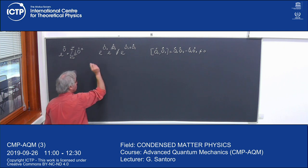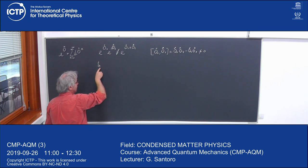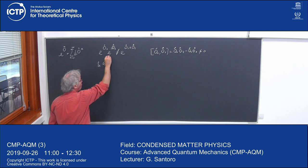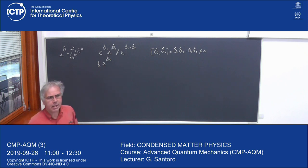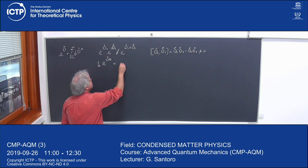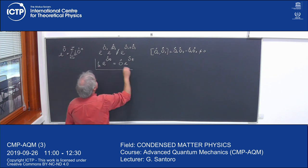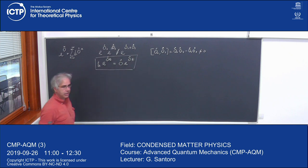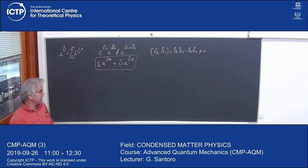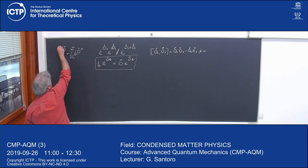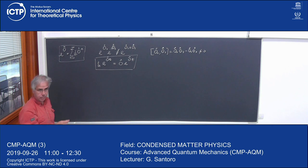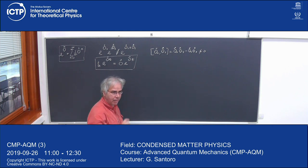However, something very similar to an ordinary function is the following. If I have a derivative with respect to t of e to the operator times t, this is something we will encounter with the Hamiltonian and the evolution operator. Then, this equals O times e to the Ot — as if these were ordinary exponentials. Let's do a quick proof.